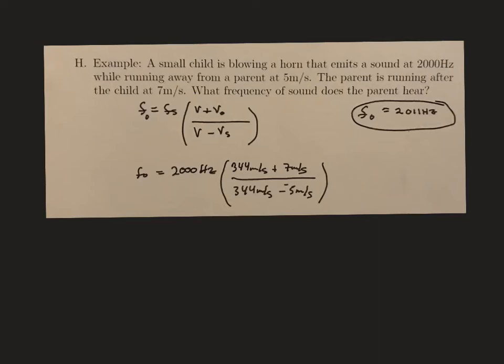In this video, we're going to look at the problem: a small child is blowing a horn that emits a sound at 2,000 Hertz while running away from a parent at 5 meters per second. The parent is running after the child at 7 meters per second. What frequency of sound does the parent hear?